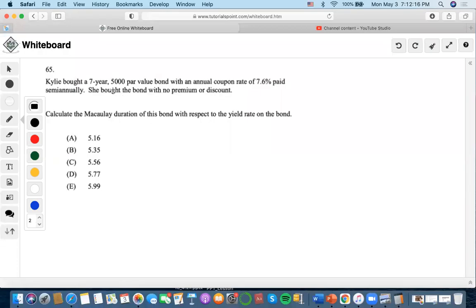Okay, so for this one, it says Kylie bought a $5,000 par value bond with an annual coupon rate of 7.6% paid semi-annually. She bought the bond with no premium or discount, so that's the definition of par value.